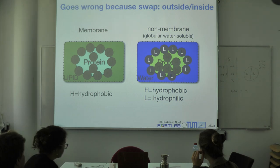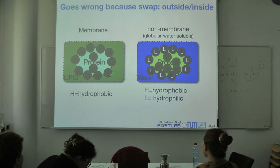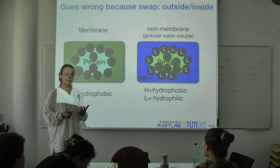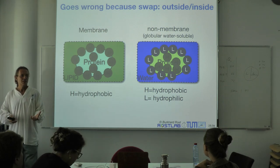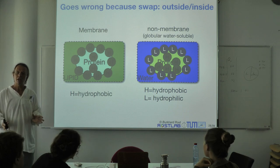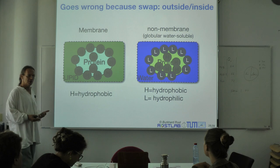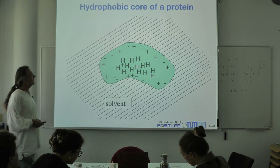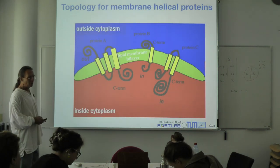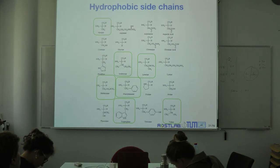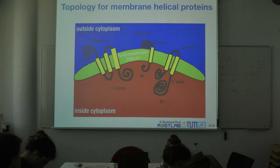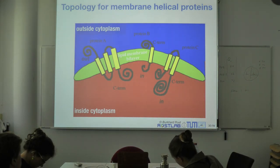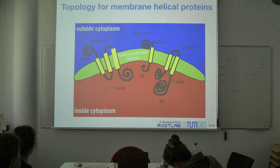Whether the inside-outside hydrophobicity reversal is the exact cause remains unclear, but the way to attack the problem is by retraining on membrane protein data. The simplest way to predict transmembrane helices is suggested by looking at what these segments have in common. Any suggestion for a simple prediction approach?